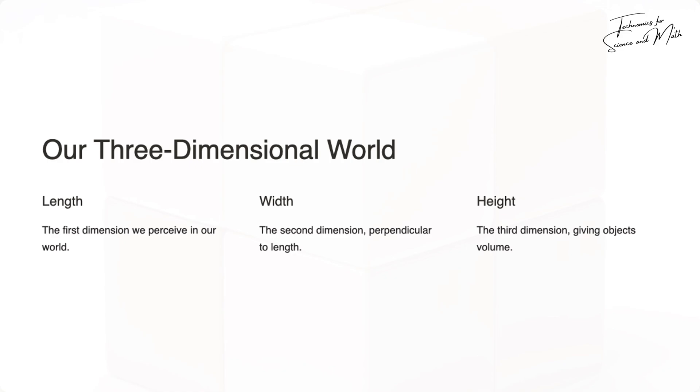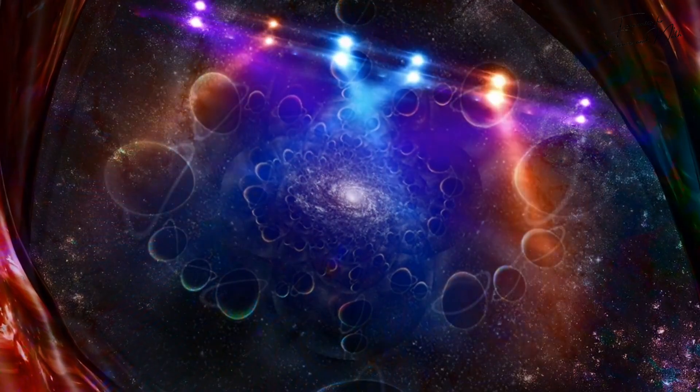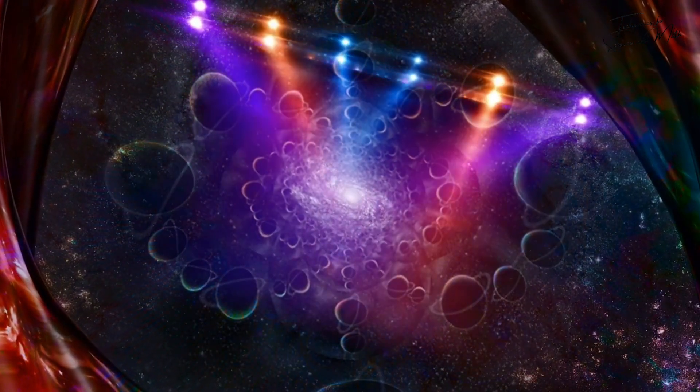We live in a three-dimensional world with length, width, and height. For example, think about a desk—a desk has length, width, and height. We can freely move around in this three-dimensional space. The fourth dimension adds another spatial dimension to these three.